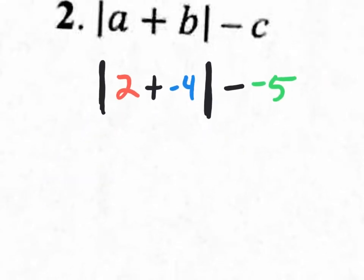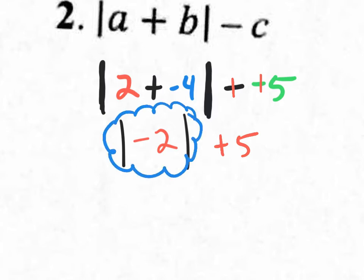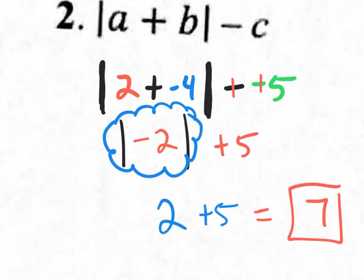Inside the absolute value, 2 plus negative 4 is negative 2. Out here we have minus minus 5, which changes to plus 5. So we now take the absolute value of negative 2, which is 2, then bring down the plus 5. Two plus 5 is 7. That is the answer to number 2.